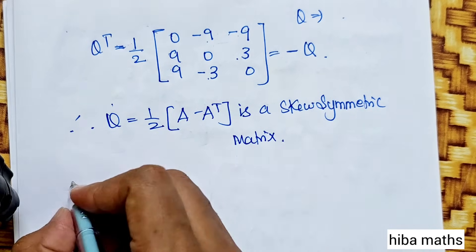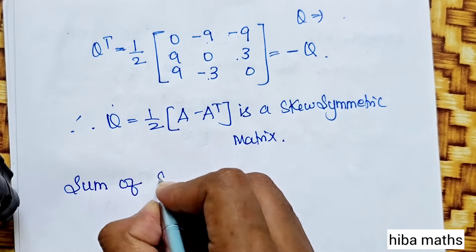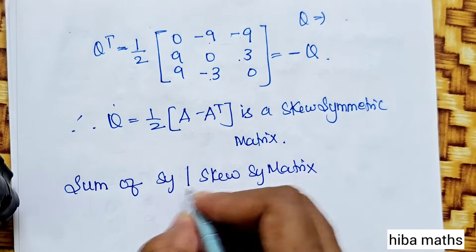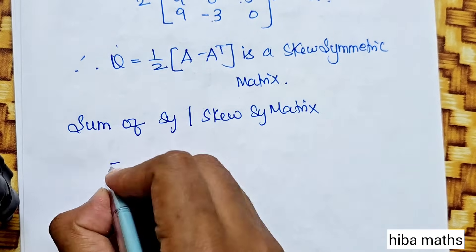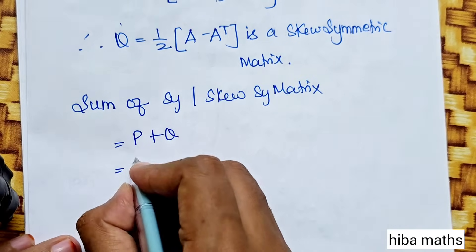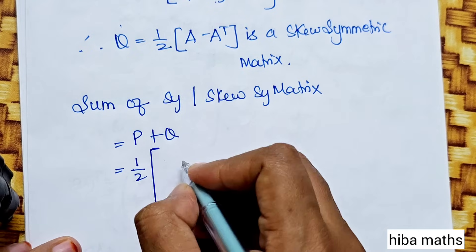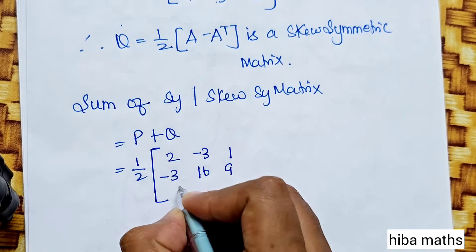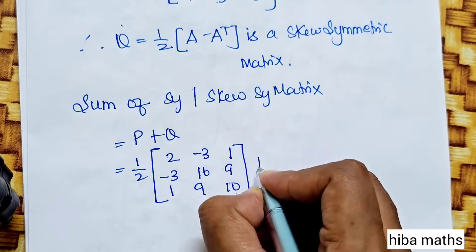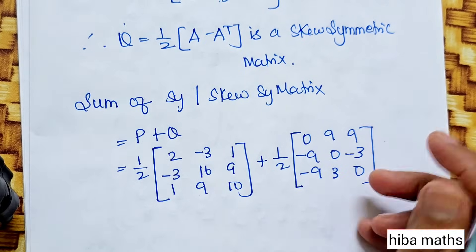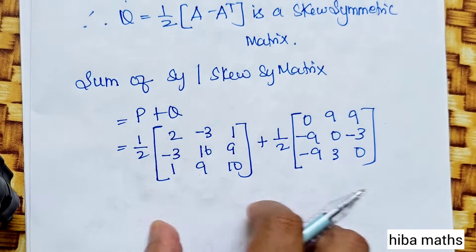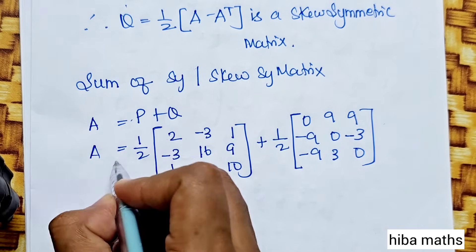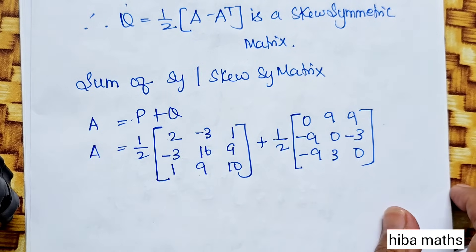Now for the final answer: express A as the sum of symmetric and skew symmetric matrix. A equals P plus Q, where P is 1 by 2 times [2, -3, 1; -3, 16, 9; 1, 9, 10] plus Q is 1 by 2 times the skew symmetric part. Therefore A equals P plus Q.